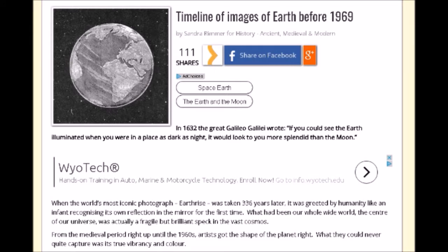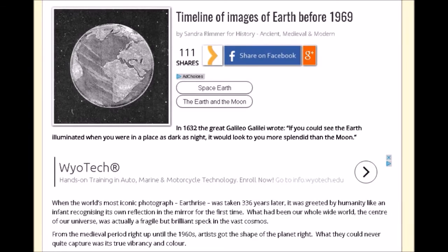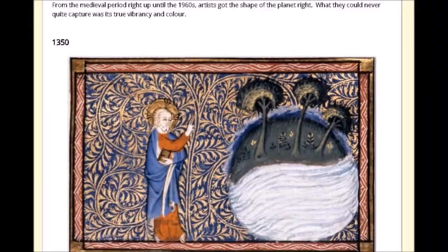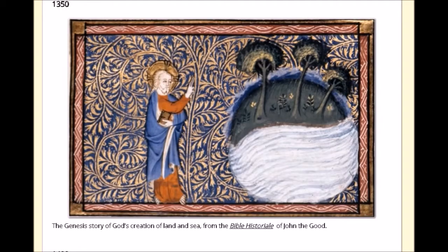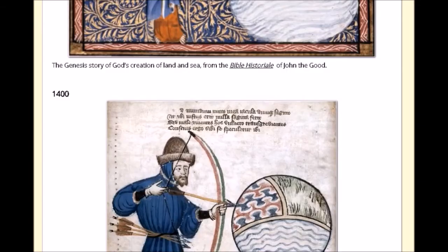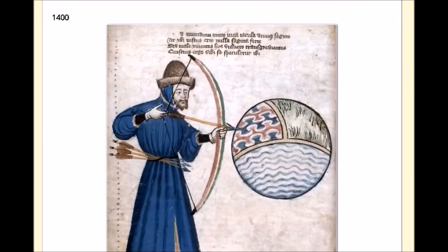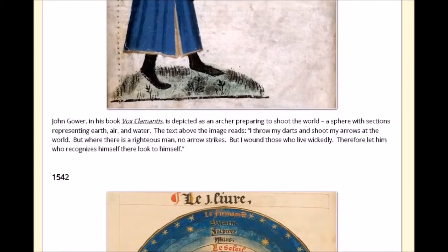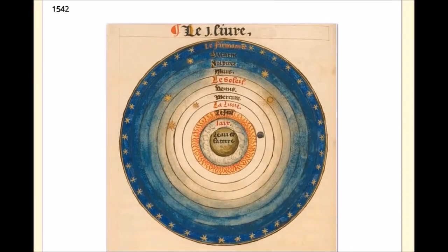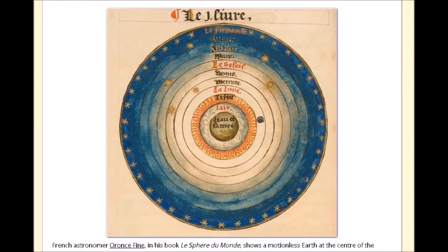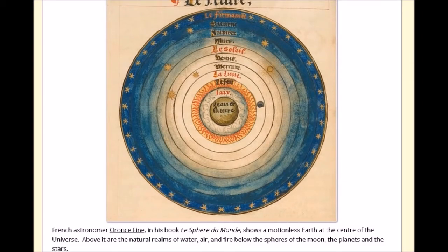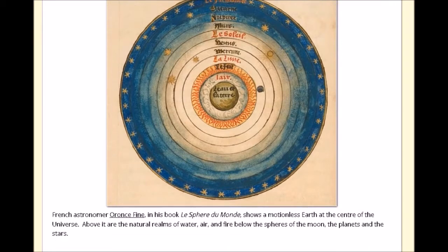The title of the page is 'The Timeline of Images of Earth Before 1969,' and it is very interesting. When you scroll through, you can see they start in 1350 with this Genesis story picture, and then you have the 1400 — a guy with an arrow shoots the earth, which is the elements — and then the 1542, which interestingly enough has the earth in the center of the universe with the realms of water, air, and fire below the spheres of the moon, planets, and stars.